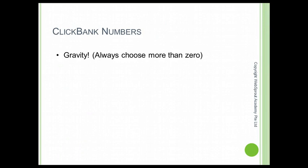The first metric is called gravity. Gravity means the higher the gravity, the more sales the product has been making recently. You want to promote something with a good, strong gravity number, but not too high. I'll tell you why in the next few lessons. You must not promote a product with gravity zero — it means that for a long while there haven't been any sales for that product.